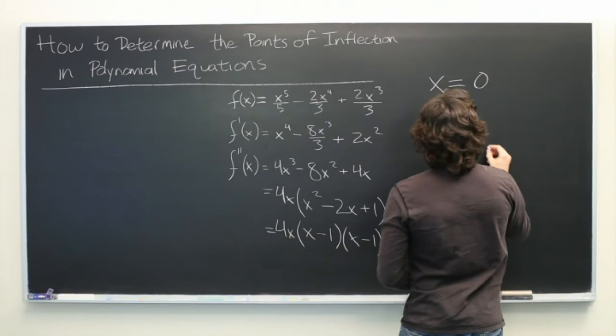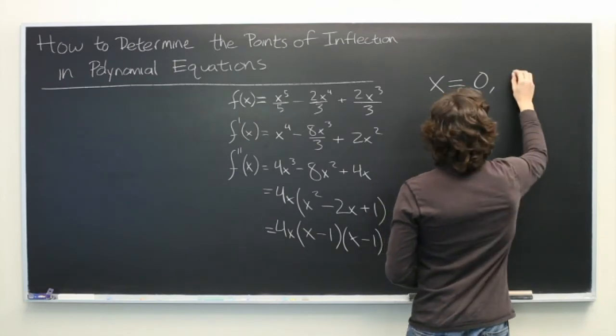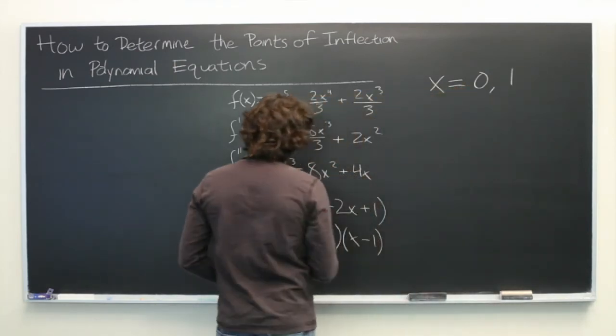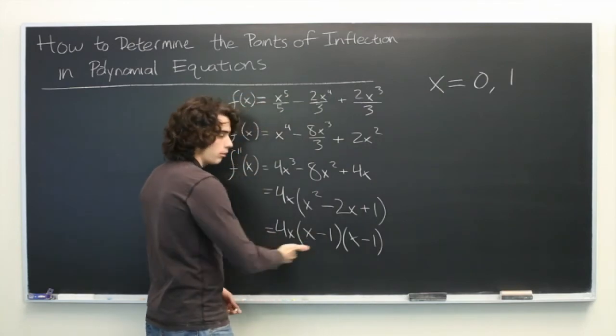And you can quickly find that our candidate points are x = 0, since four times zero is zero, and x = 1. Since we plug in one, one minus one is zero, all thing goes to zero.